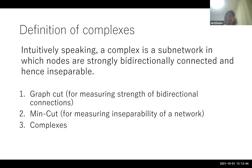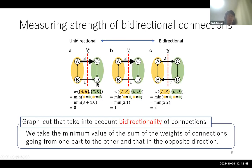Let me explain the graph cut. We use the concept of graph cut for measuring strengths of bidirectional connections. Specifically, we take the minimum value of the sum of the weights of connections going from one part to the other and in the opposite direction. It takes a large value when connections are bidirectional, and a small value when connections are unidirectional.